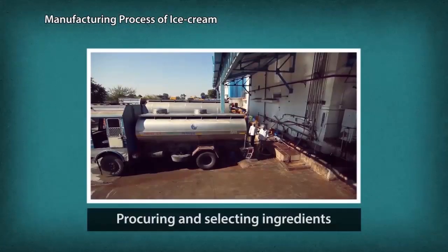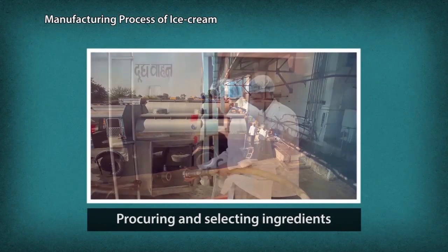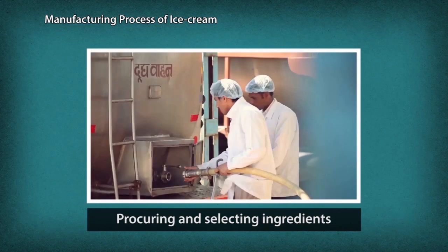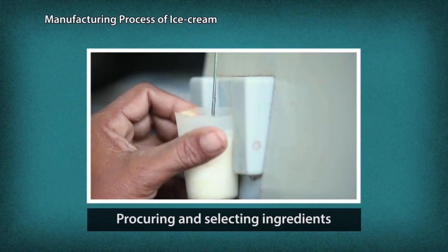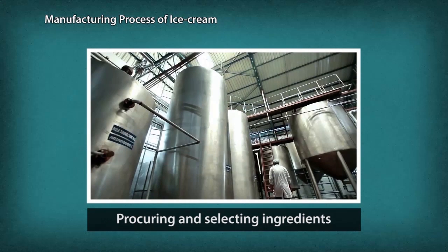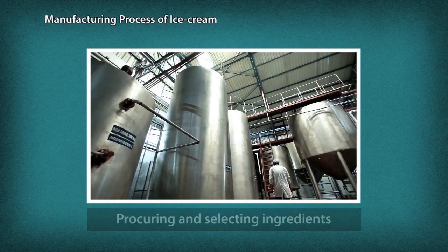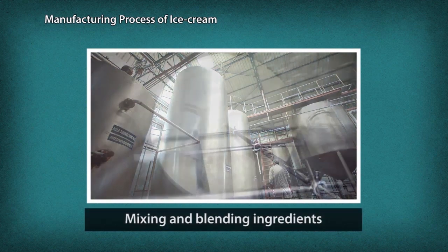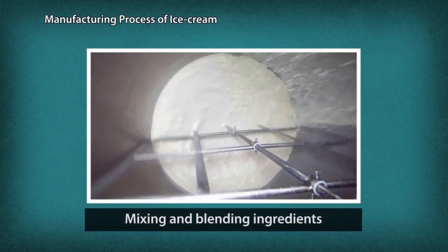In the manufacturing process of ice cream, after the milk is procured from the dairy farm, it is checked and stored in large tanks for cooling at less than 5 degrees centigrade. This cool milk is then transferred to the tri blender.